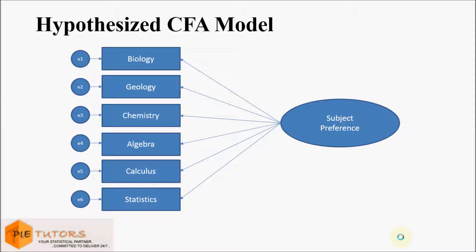Model fit measures can then be obtained to assess how well the proposed model captures the covariance between all items in the model. If the model specified is inconsistent with the sample data, statistical tests of model fit will indicate a poor fit and the model will be rejected. If the fit is poor, it may be due to wrong specification or because some items within a factor are more correlated to each other than others.